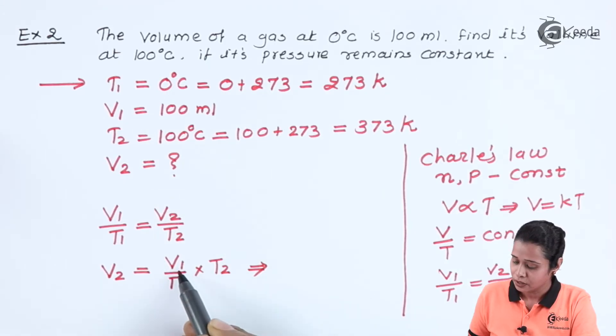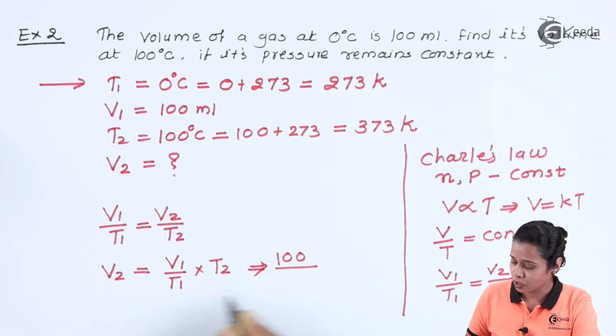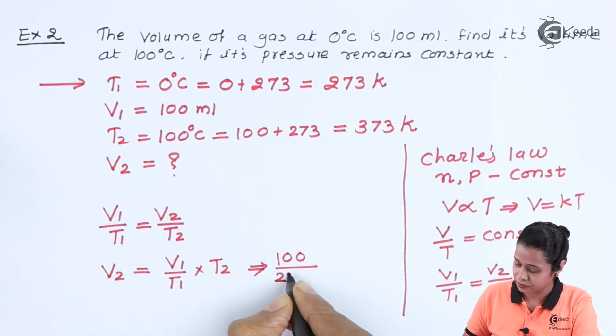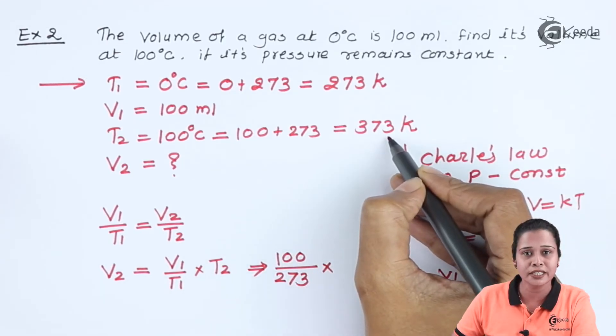We will have V1 that is 100 upon T1. T1 is 273 into T2. T2 is 373.